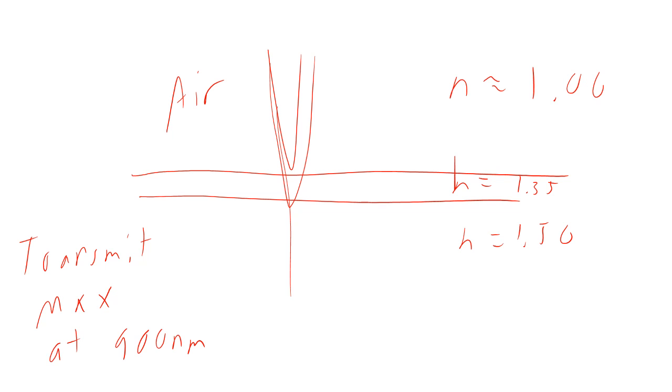On the other hand, I want to have minimum transmission at 450 nanometers. So that's a bluish violet color. And so we want to have the least at that and the maximum at 900 nanometers infrared. This would be like an infrared camera or something, and we don't want to saturate it with blue light. So what do we do?